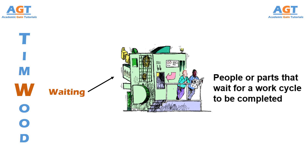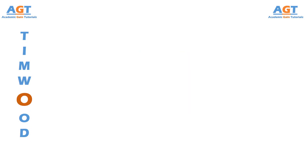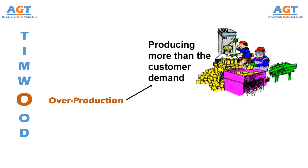The letter O represents overproduction, which means producing more than the customer demands. For example, a customer needs a lot of 500 goods but the production was made of 800 goods. So the extra 300 goods that were produced is an obvious waste, since the customer is not going to buy it.